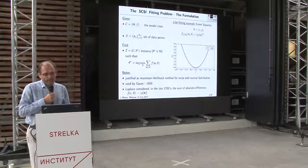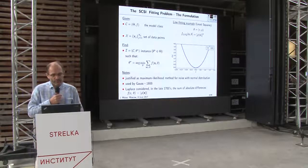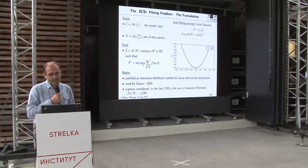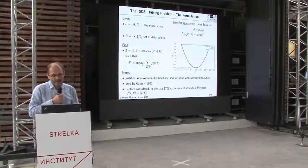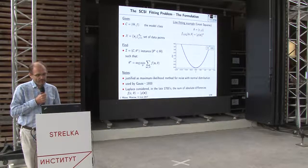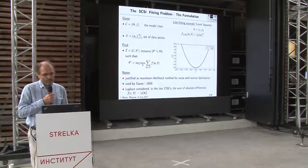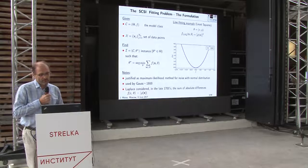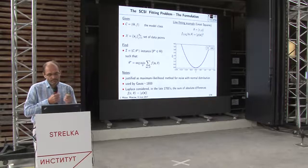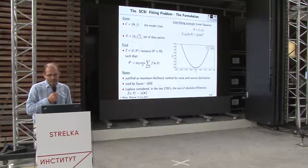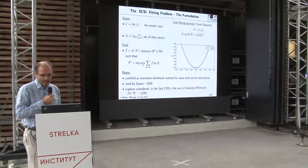More formally, we need the concept of a model class — the set of lines. Given the set of points, the output is a single instance minimizing the cost function with a squared residual. This problem goes back to Gauss in the early 1800s. Laplace before him suggested minimizing the sum of absolute differences, a slightly harder but also solvable problem.